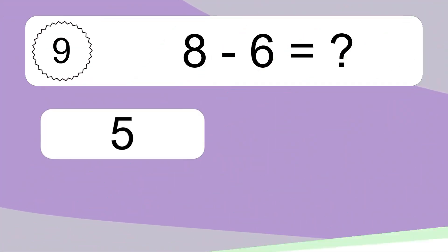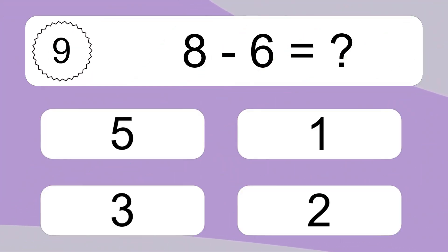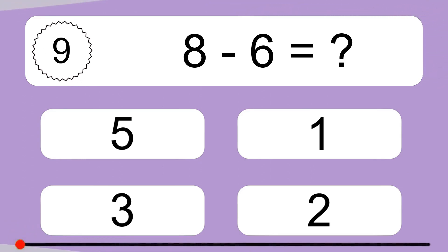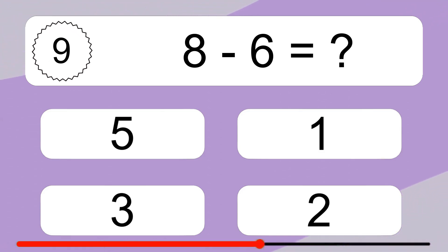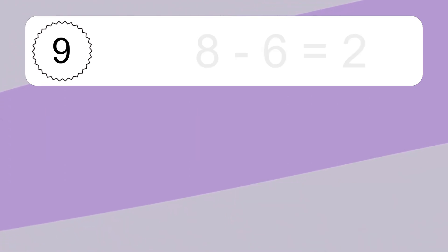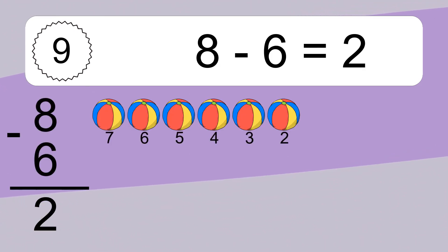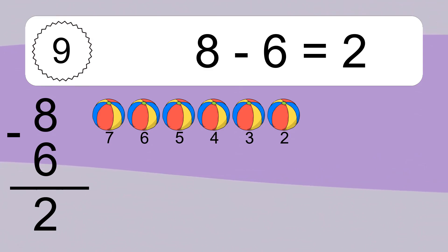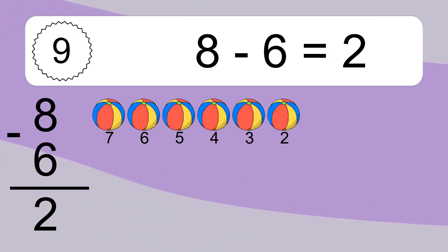8 minus 6 equals what? 8 minus 6 equals 2. Let's count it. 7, 6, 5, 4, 3, 2.